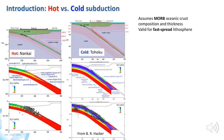Subduction zones can be classified as hot or cold. On the one hand, we have places like Nankai, where a hot young lithosphere is being subducted, and the hot thermal structure causes early dehydration of the slab, shallow seismicity, and a reduced seismogenic zone. On the other hand, we have places like Tohoku, where an old and cold lithosphere is being subducted, resulting in deeper slab dehydration, greater water transport to sub-arc depths, and a characteristic double seismic zone. Other subduction zones tend to fall between these two end members, depending on plate age, convergence rate, and slab dip.